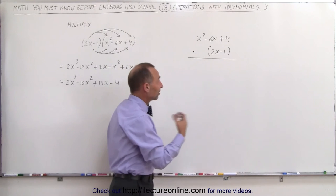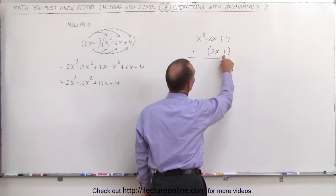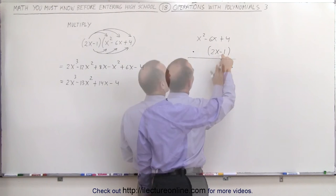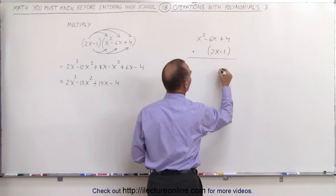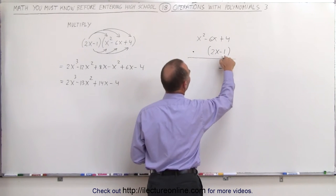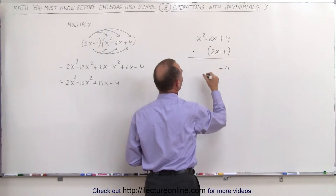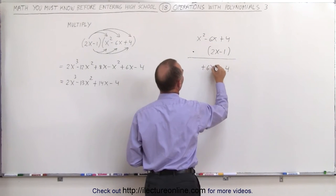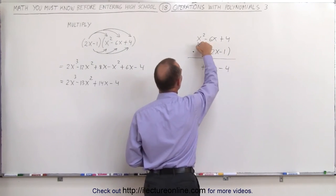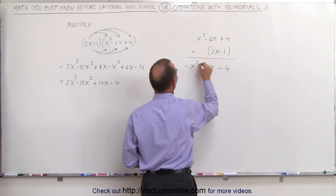And the way that works is exactly the same. We start out with this number right here and multiply this times each of these terms up here. So minus 1 times 4 is minus 4. Minus 1 times minus 6x is plus 6x. Minus 1 times x squared is minus x squared.